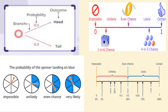Consider the third diagram — the probability of a spinner landing on blue. If there is no blue on the spinner, it is impossible. If there is a small blue section out of four sections, it is unlikely. If two out of four sections are blue, it is an even chance. If most sections except one are blue, it is very likely or nearly certain — around 90%. Looking at the number line diagram: impossible is at the left end, even chance is in the middle at 50%, and certain is at the right end.